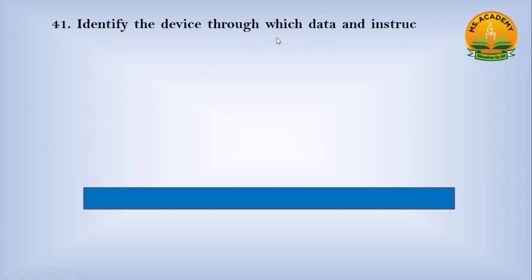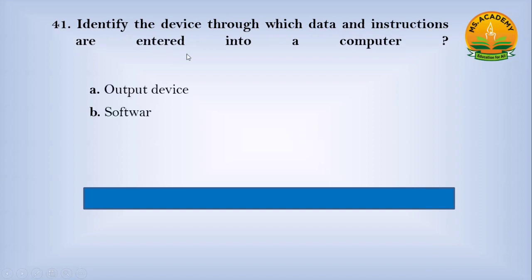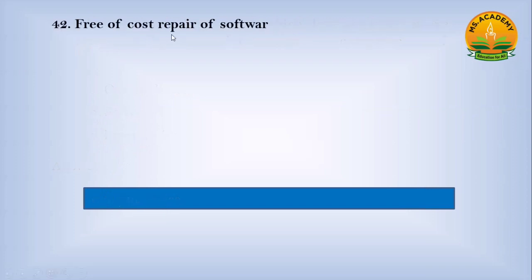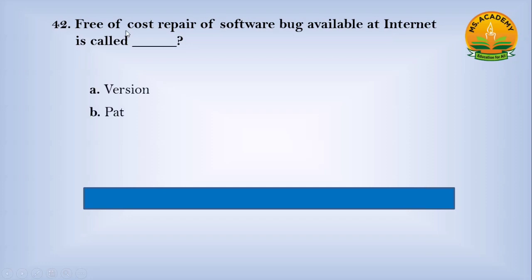Identify the device through which data and instructions are entered into a computer — option A: output device, option B: software, option C: input device. Answer: C — input device. A free-of-cost repair of software bugs available on the internet is called — option A: version, option B: patch, option C: tutorial. Answer: B — patch.